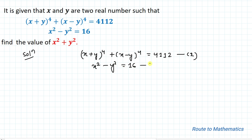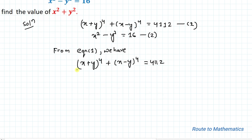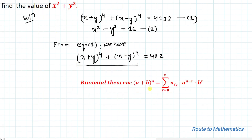From the first equation we have (x+y)⁴ + (x−y)⁴ = 4112. Here we are going to apply the binomial theorem: (a+b)ⁿ equals the summation from r=0 to n of nCr multiplied with a to the power (n−r) multiplied with b to the power r.